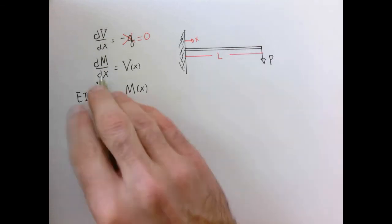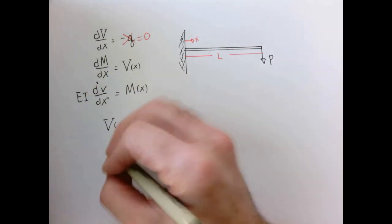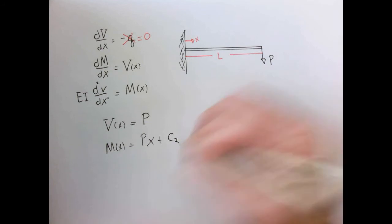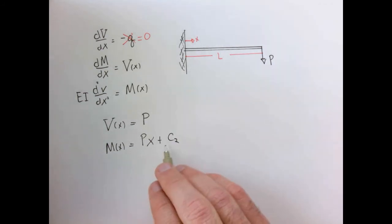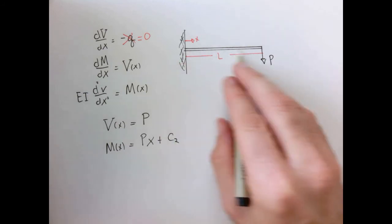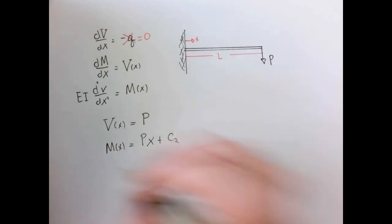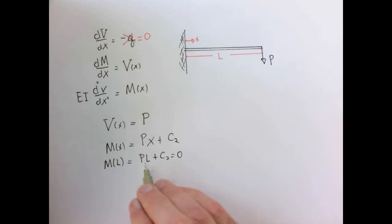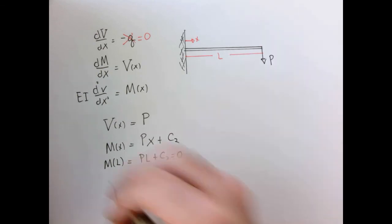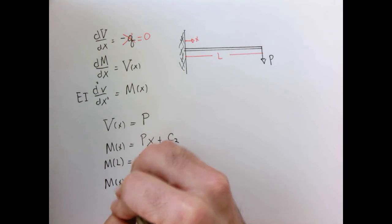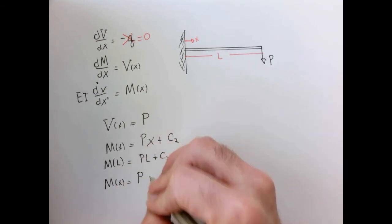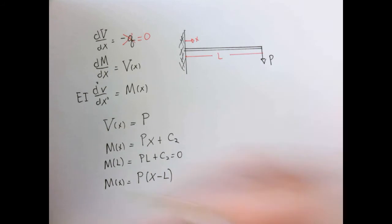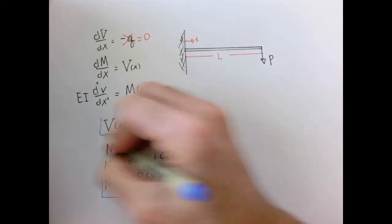Now I integrate the moment equation. Since dM/dx equals constant P, the moment integrates to Px plus C2. Applying the boundary condition that the internal bending moment goes to zero at the free end — M evaluated at L equals zero — tells us C2 equals minus PL. Therefore, our moment equation as a function of x is determined, giving us the shear and bending moment.